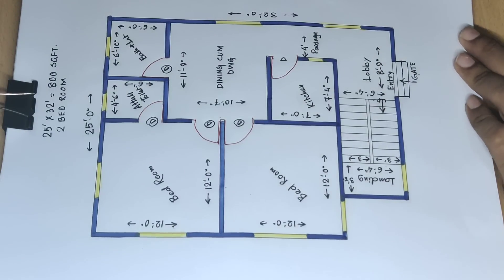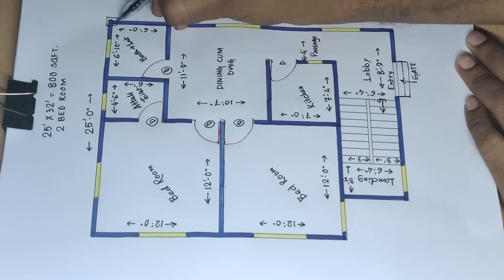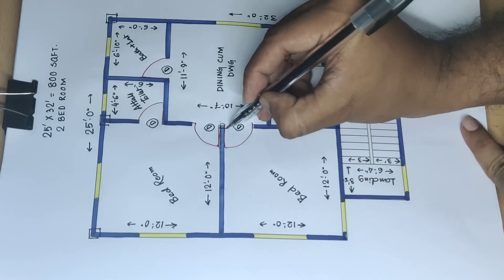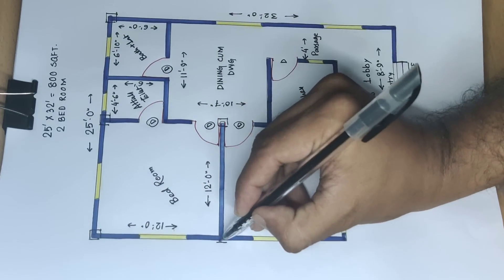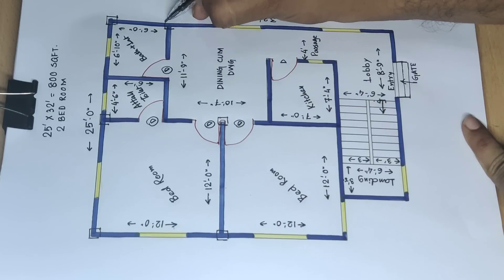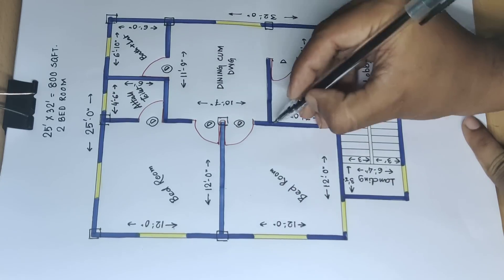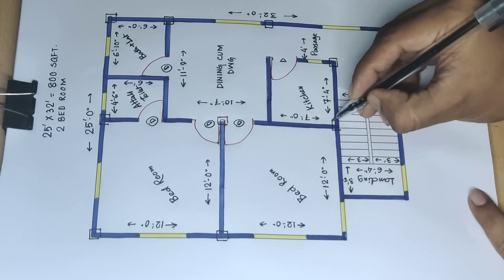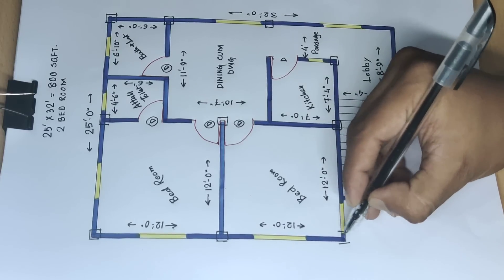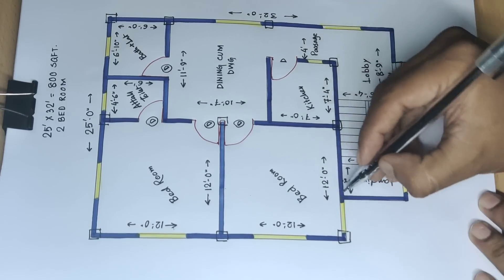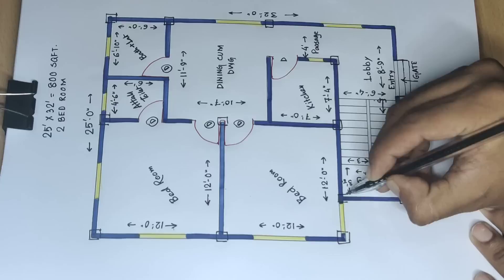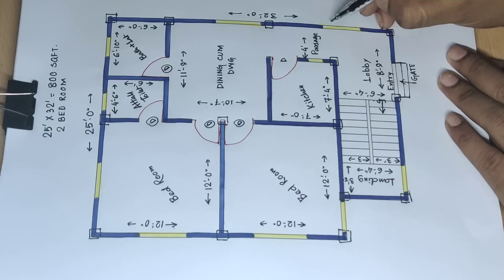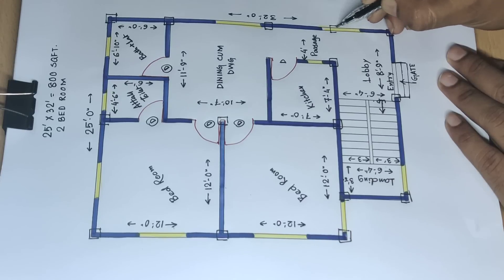Now this is a column — 10 inches into 12 inches, rectangle size column. This is a column, and this is a column, and this is a column.